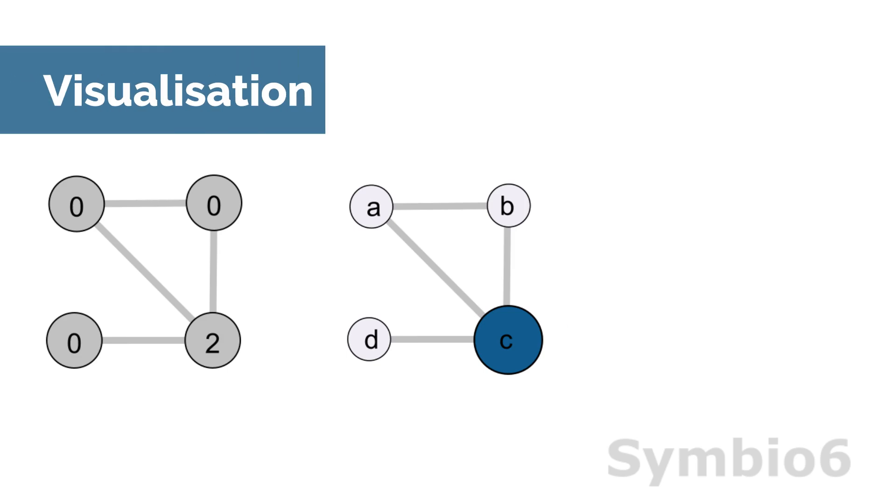The same networks, but the centrality is now indicated by size and color. These are two visualization techniques to draw attention to which node is important. In this network C is the most important node.